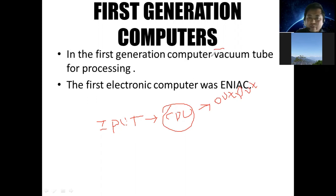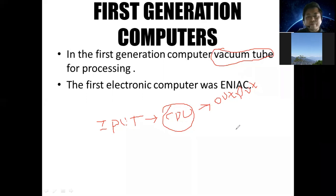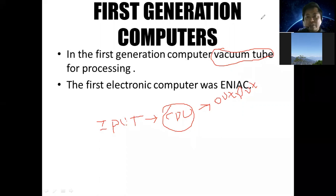Vacuum tubes were used for data processing in the first generation. Data is input, then the CPU — the central processing unit — processes it, and you get the output. The first electronic computer was ENIAC, which stands for Electronic Numeric Integrated And Calculator.